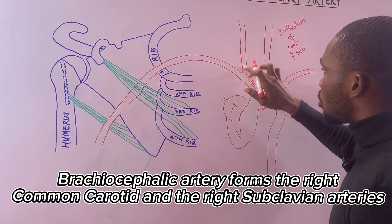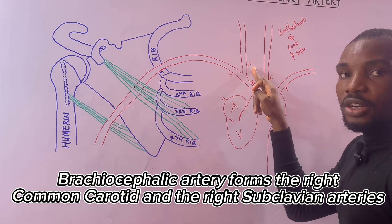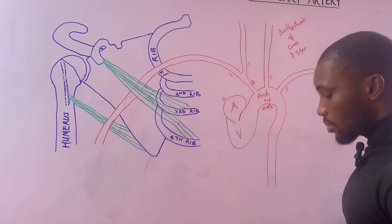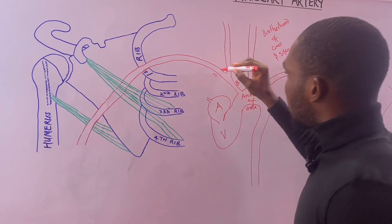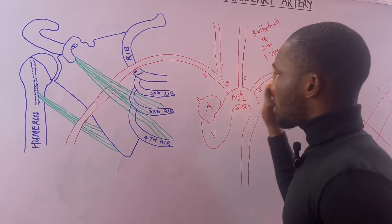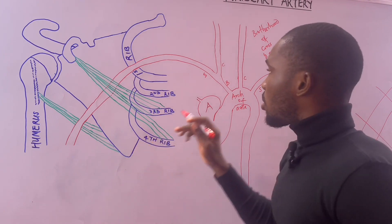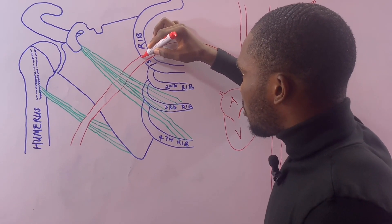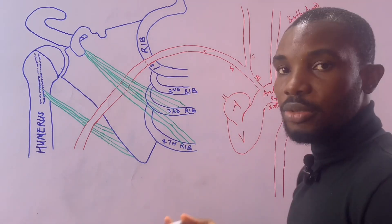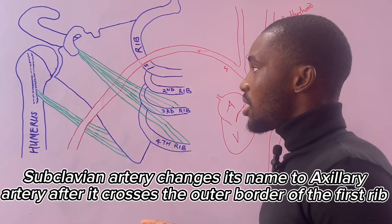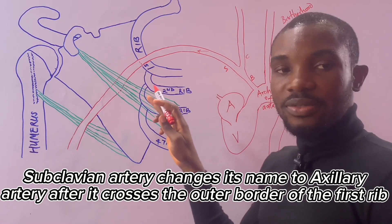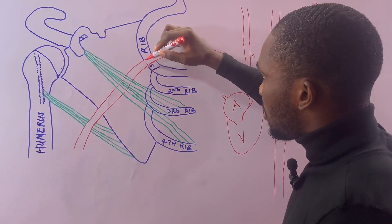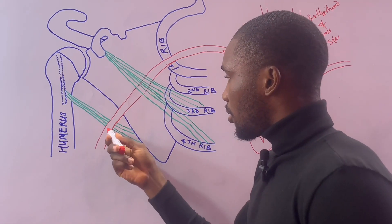The brachiocephalic gives off two branches — the subclavian and common carotid of the right side — while on the left, both the common carotid and subclavian originate directly from the arch of aorta. The subclavian artery moves and changes its name once it reaches the outer border of the first rib — it is then called the axillary artery.